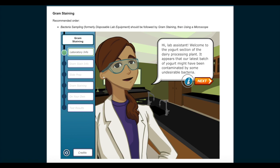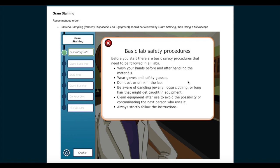Before you start, there are basic safety procedures that need to be followed in all labs. Wash your hands before and after handling the materials. Wear gloves and safety glasses. Don't eat or drink in the lab. Be aware of dangling jewelry, loose clothing, or long hair that might get caught in equipment. Clean equipment after use to avoid the possibility of contaminating the next person who uses it. Always strictly follow the instructions given.